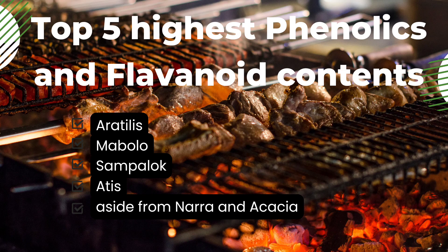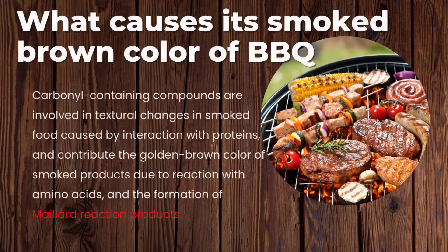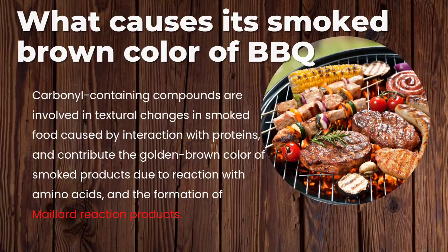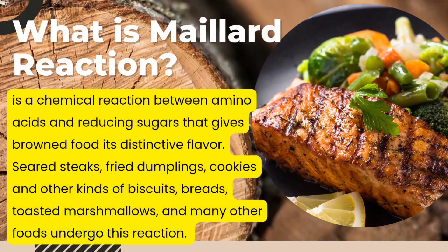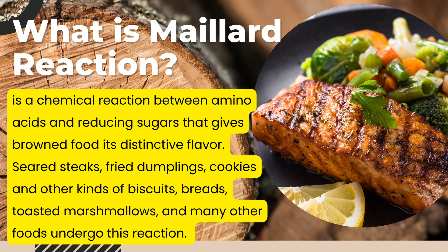What causes the smoky brown color of barbecue? Carbonyl-containing compounds are involved in textural changes in smoked food caused by interaction with proteins and contribute the golden brown color of smoked products due to reactions with amino acids and the formation of Maillard reaction products. The Maillard reaction is a chemical reaction between amino acids and reducing sugars that gives browned food its distinctive flavor. Seared steaks, fried dumplings, cookies and other kinds of biscuits, breads, toasted marshmallows, and many other foods undergo this reaction.